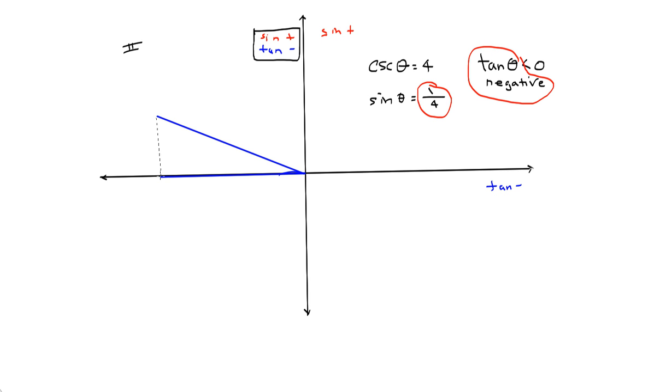So what have we got? Sine is opposite over hypotenuse. So opposite side, here's my angle, is 1. My hypotenuse is 4. Is that a positive one? Sure. Because in quadrant 2, x is negative, y is positive. We're talking about that point right there. So we want to find this missing side. There's always going to be a side that's missing. So let's use the Pythagorean theorem. 1² + x² = 4². That's 1 + x² = 16. x² = 15. So x is going to be either plus or minus the square root of 15.